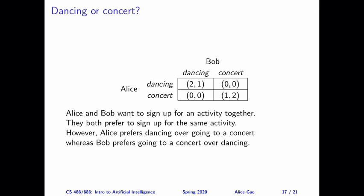From the utilities, you can see that if both of us go dancing, we're both happier, but I am much happier than Bob. Whereas if we both go to a concert, we both get positive utility, but Bob is happier than I am.